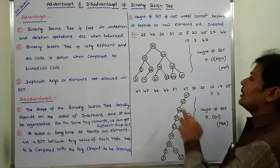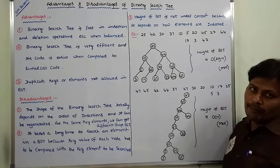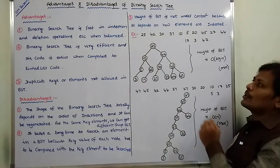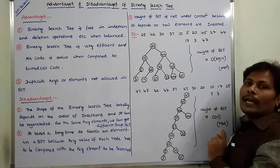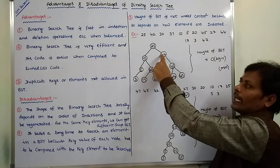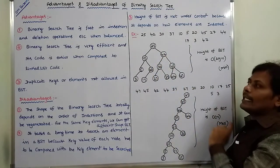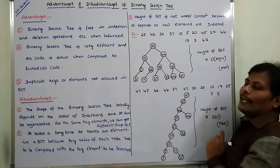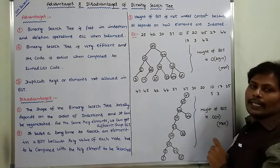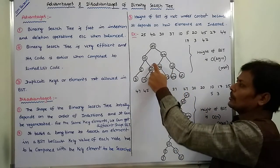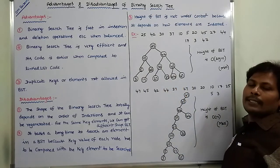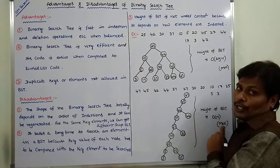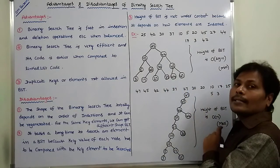For example, to search key element 37 in the binary search tree: 37 is compared with 25 — it is greater, go to the right subtree. Here 42 is there; 37 is compared with 42 — it is lesser, go to the left subtree. 37 is compared with 30 — it is greater, go to the right subtree. Now 37 is compared with 37 — our key element is found. So the search is successful.